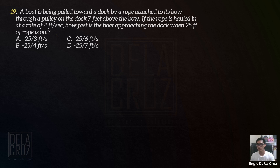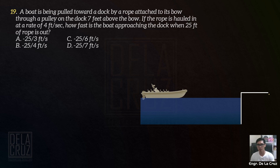Number 19. A boat is being pulled toward a dock by a rope attached to its bow through a pulley on a deck 7 feet above. If the rope is hauled at a rate of 4 feet per second, how fast is the boat approaching the dock when 25 feet of rope is out? Let's say ito yung boat natin — ito yung dock. Ipo-pull siya towards a dock by a rope attached to its bow.